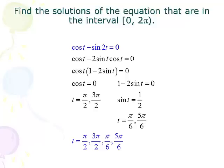That happens twice. Once in quadrant one, once in quadrant two. π/6 and 5π/6. So our four answers are π/2, 3π/2, π/6, and 5π/6.